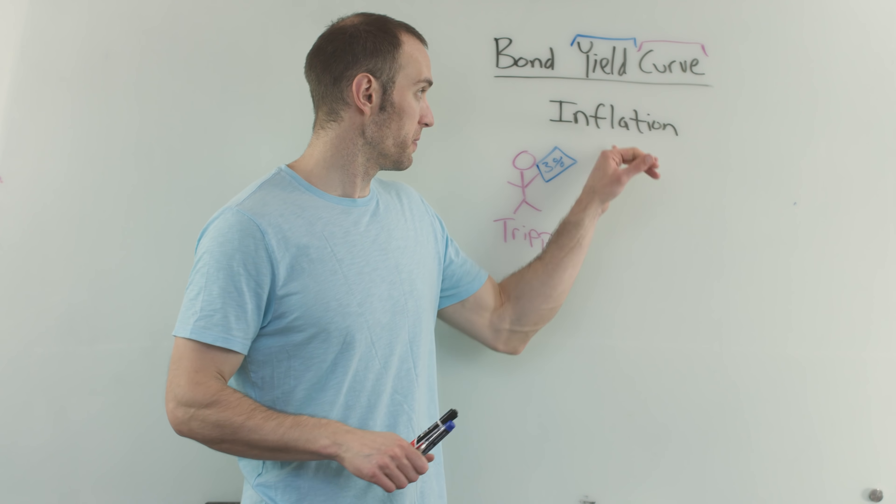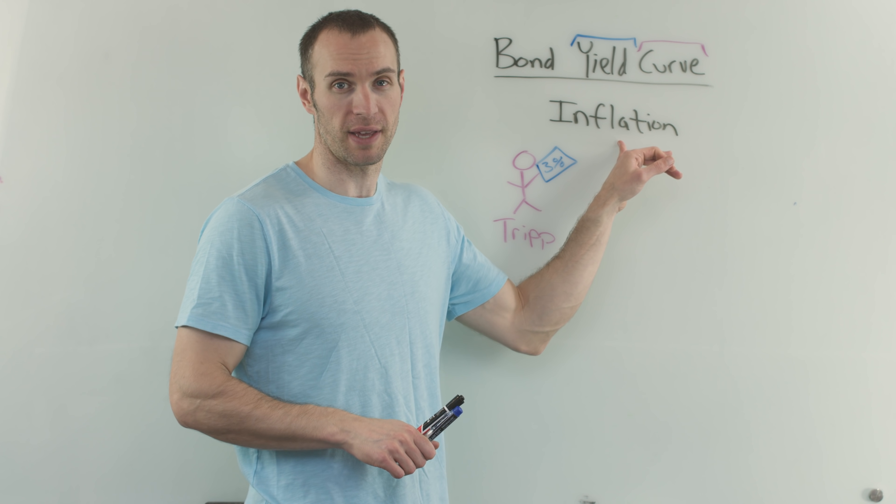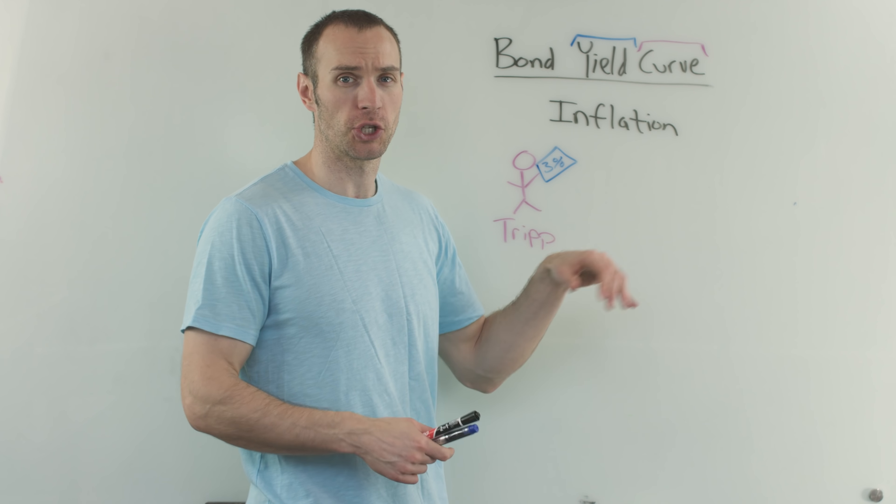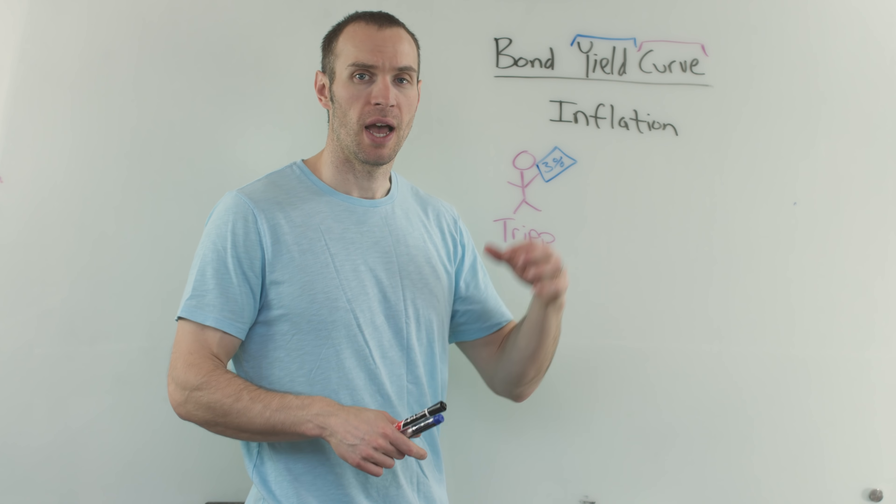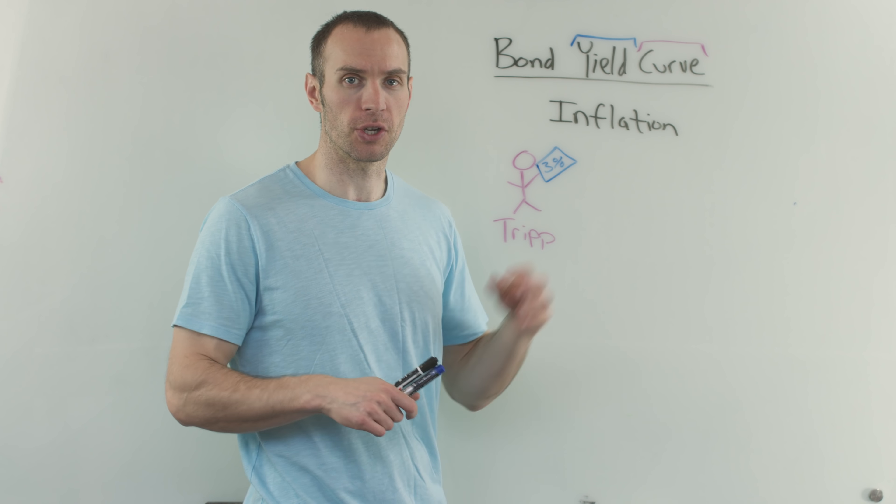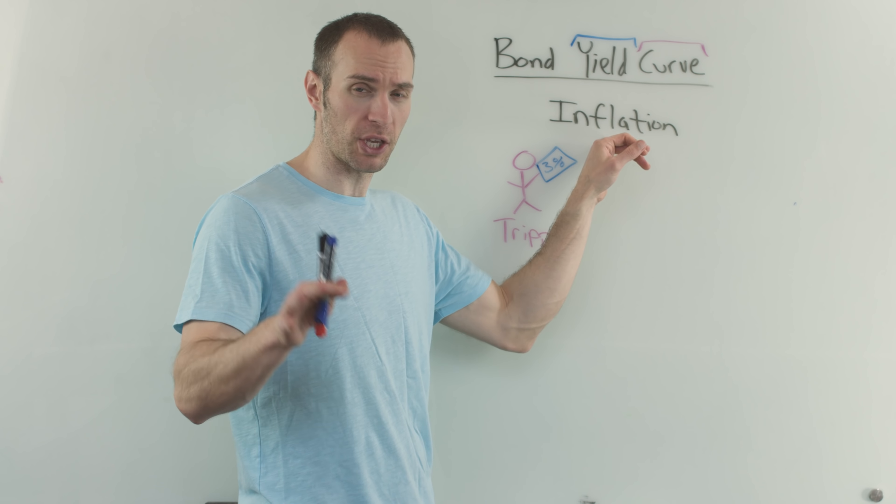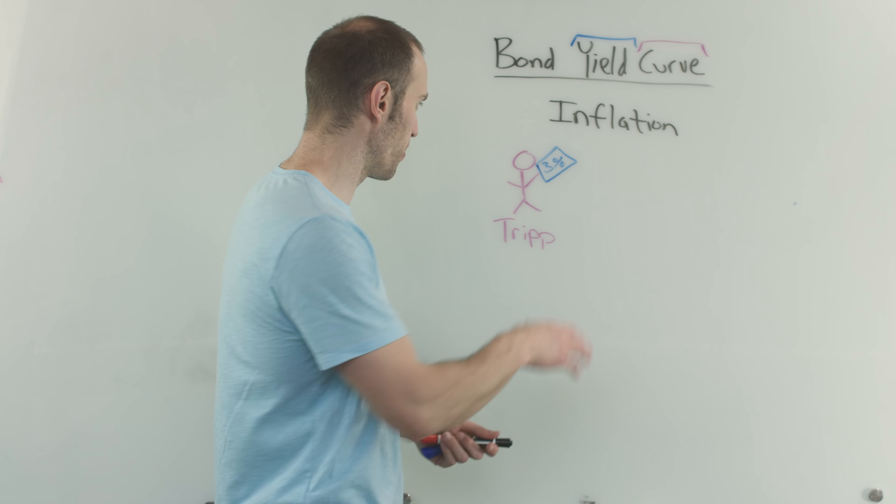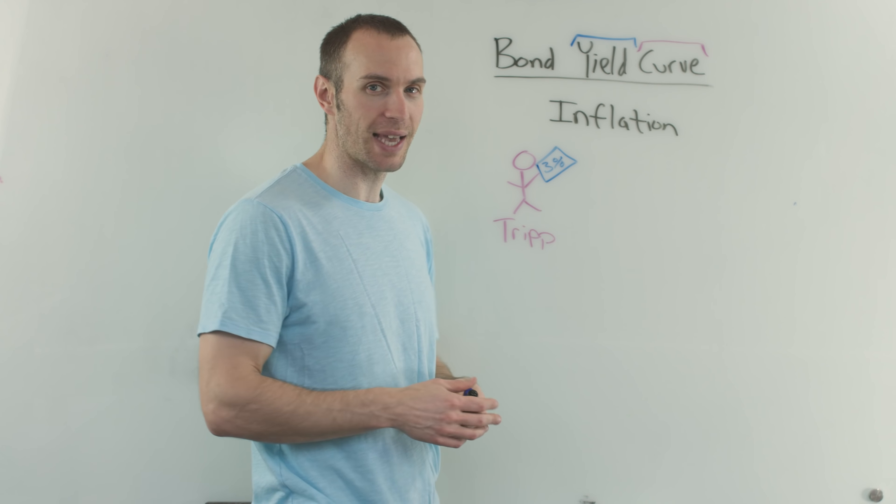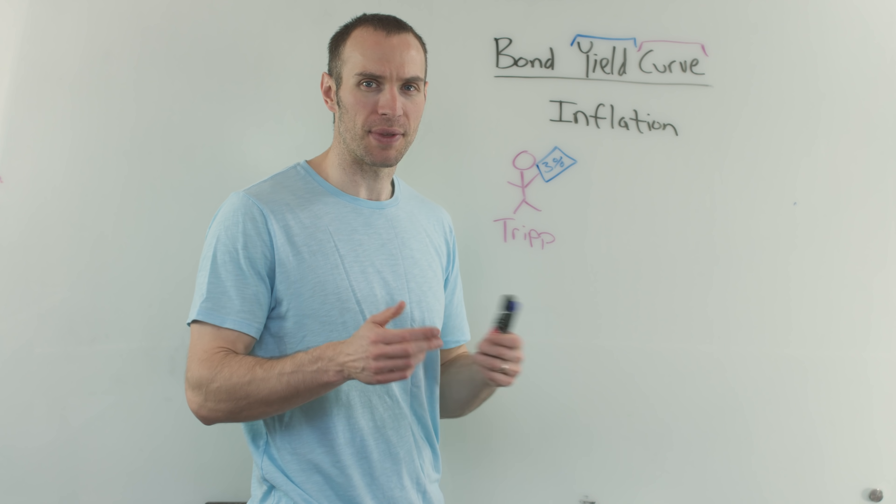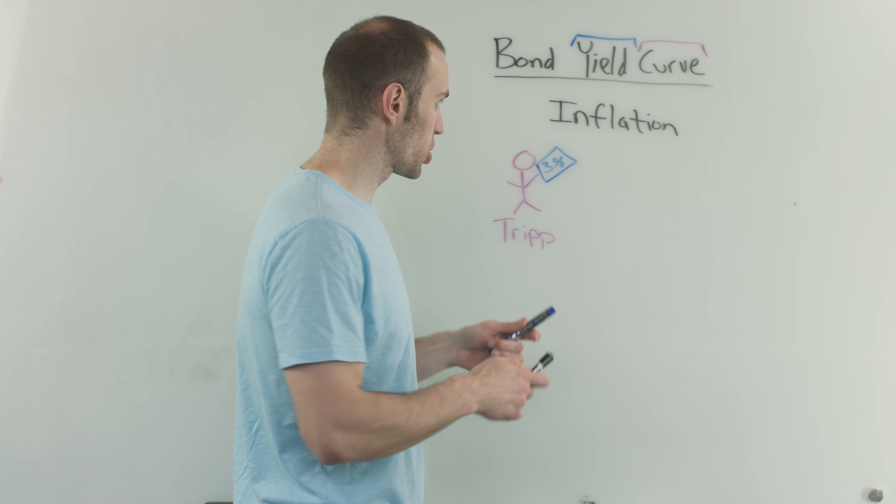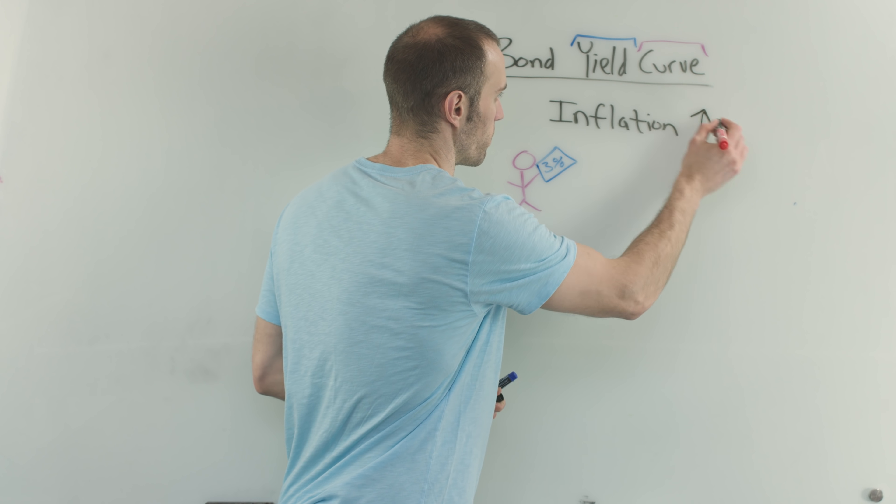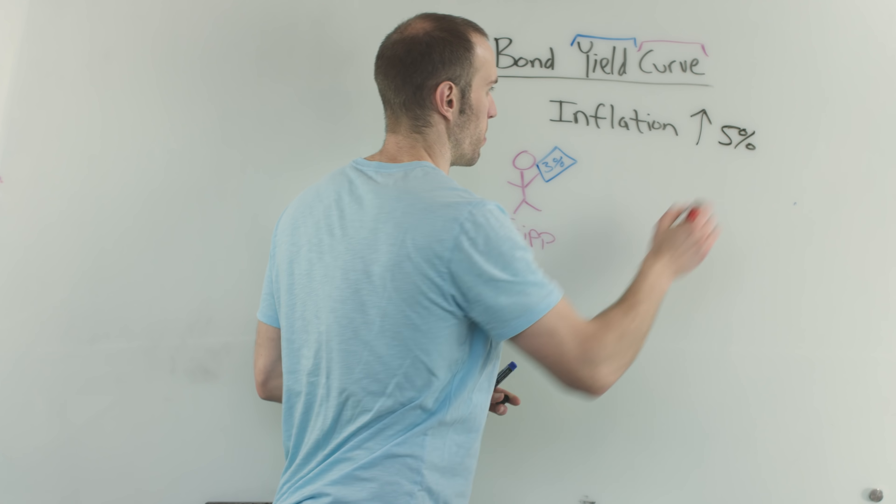Let's go on to risk number two: inflation. That is definitely a risk that exists out there. If you're not quite sure what inflation is, how it works, I have another video that you can go and check out. But I'm gonna assume that you understand what inflation is. Let's just say in this example, once again we have Trip, and he is at 3% on the yield for that bond. And let's just say that inflation for whatever reason goes up by 5%.